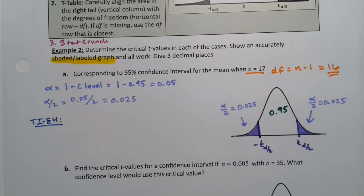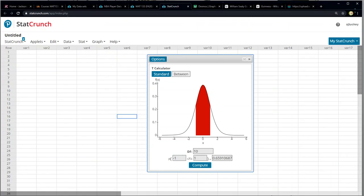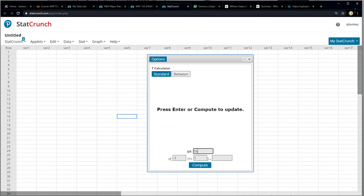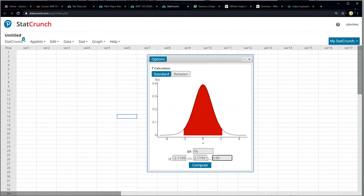So I would go back to my StatCrunch and tell it the degrees of freedom is 16. And then I'm going to put in the number for the area for the middle, which would be 0.95 enter. And there we have it.